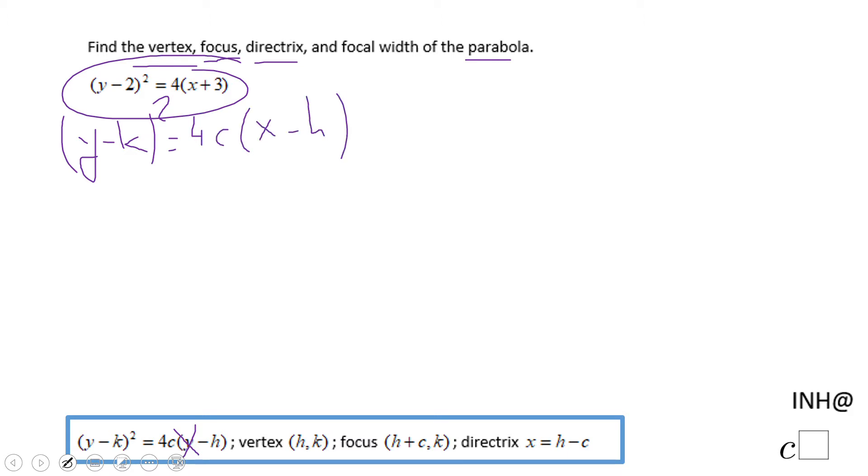Doing this allows me to find h, which will be negative 3, because x + 3 is the same as x minus negative 3. And k will be positive 2, since y minus k means k is positive 2.